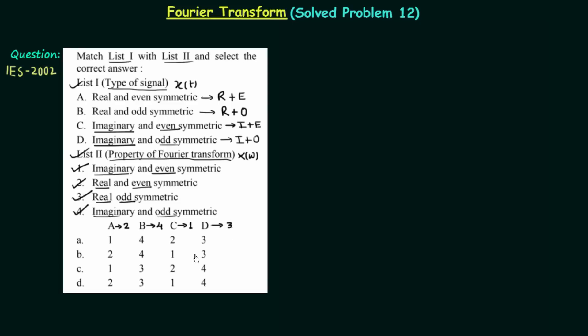Option B is the correct answer: A→2, B→4, C→1, D→3. So in this way you can easily obtain the answer if you know the xt-xω pairs.